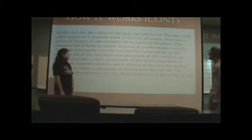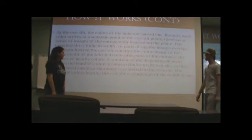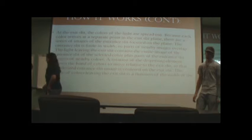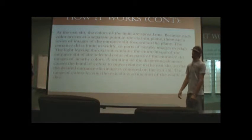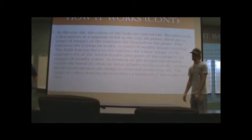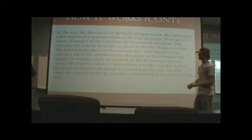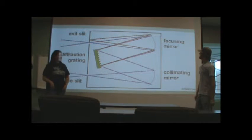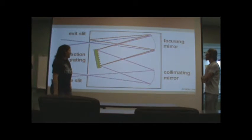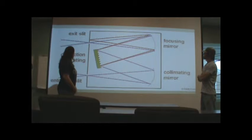The range of colors leaving the exit slit is a function of the width of the slits. So if you have a wide exit slit, then more colors are going to come out relative to the width of the exit slit. And this is just another example of the monochromator.